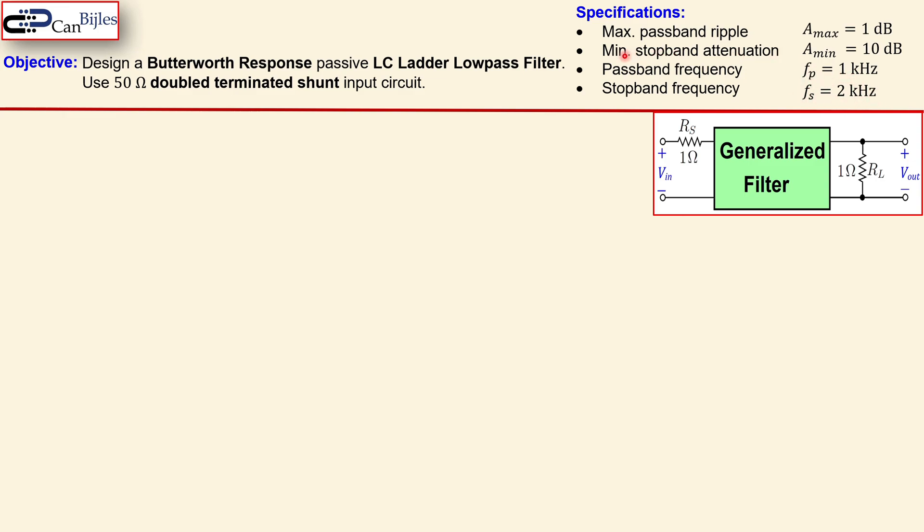The stopband frequency is 2 kHz given by f_s. That is actually the frequency where this minimum attenuation happens. So it at least of course, because you can also have 11 or 14 dB, but that depends of course on your order. Alright, these are the specifications. Let's now jump to the solutions.